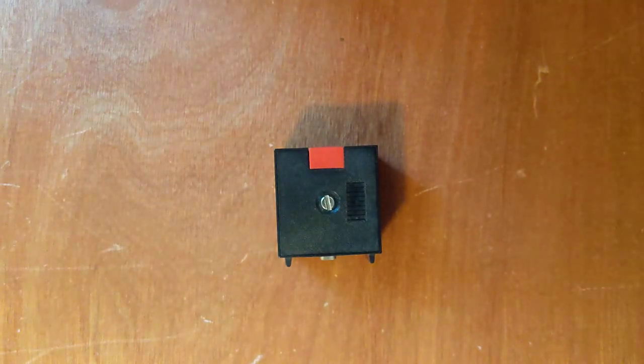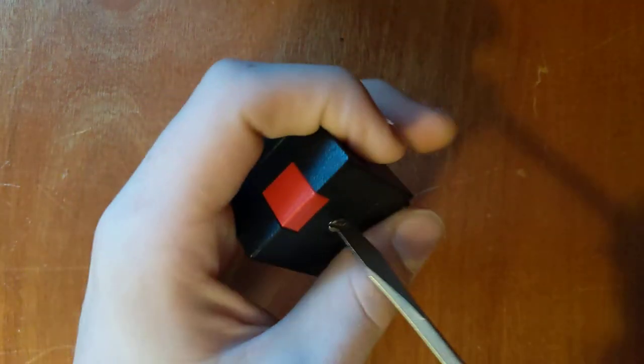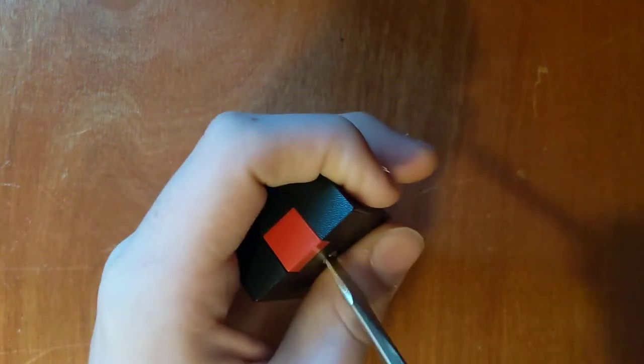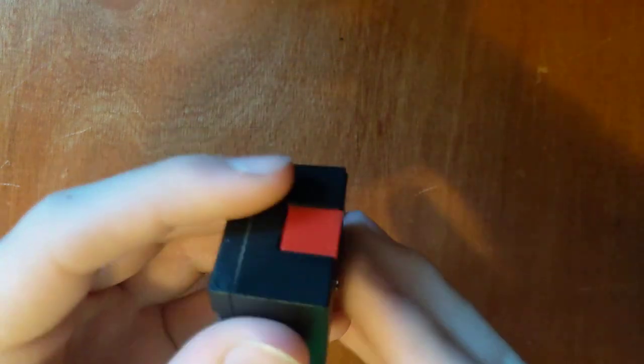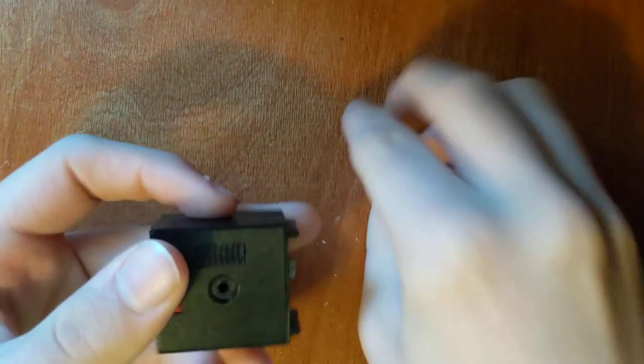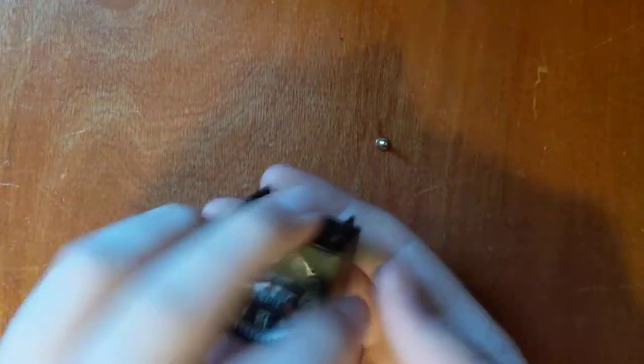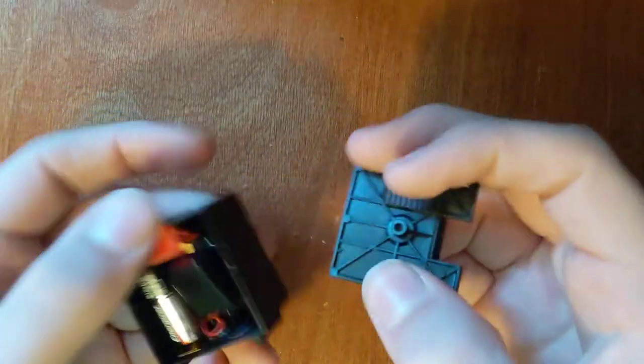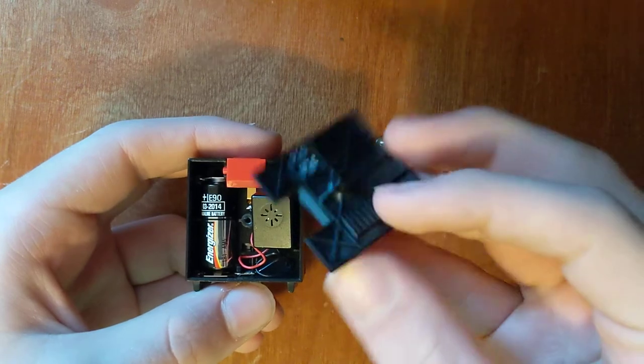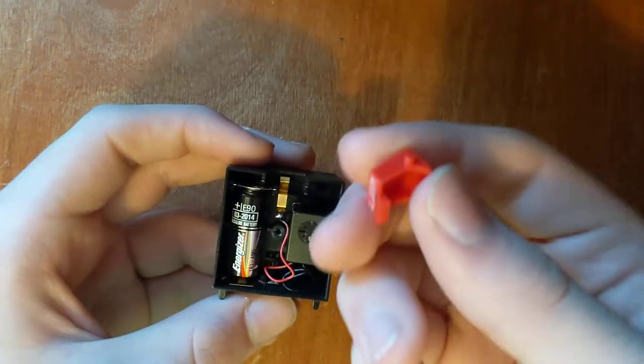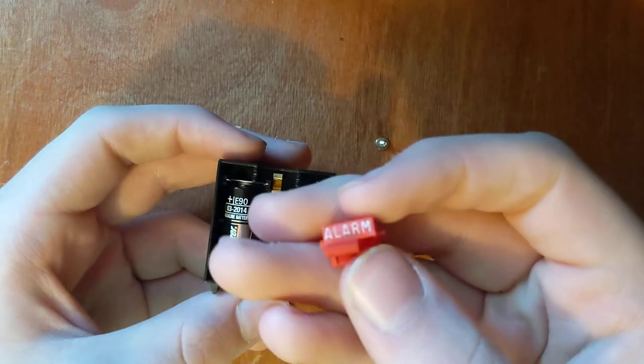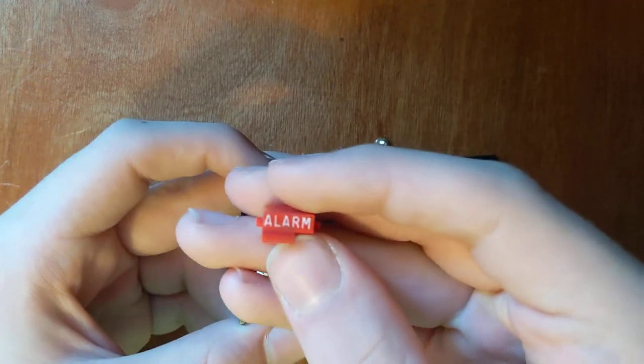To get to the battery, there's a small flathead screw on the back that lets you pop off this back cover. The red button comes out. There's the alarm.